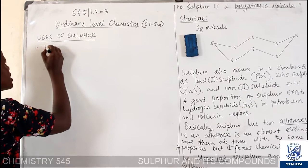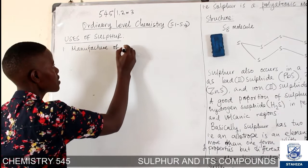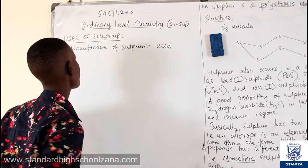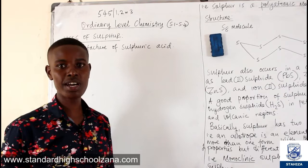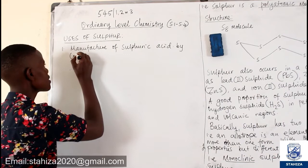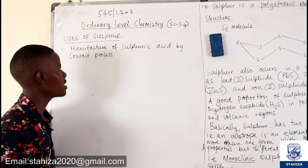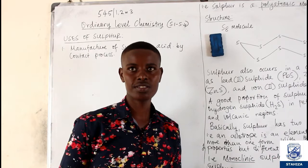Sulfur is used in the manufacture of sulfuric acid — very important. Sulfur is the starting material in the manufacture of sulfuric acid by the contact process. We shall discuss the contact process before we end the sulfur and its compounds topic.